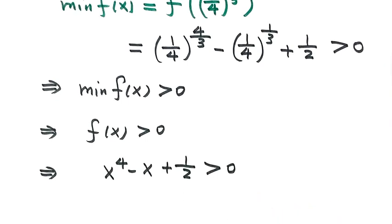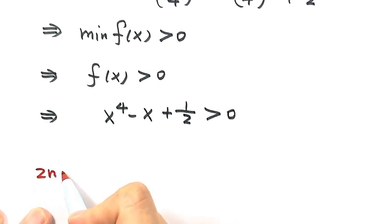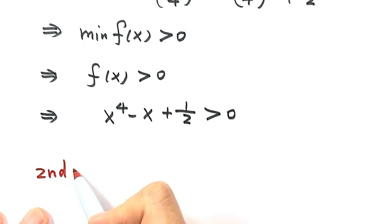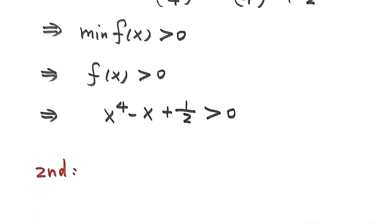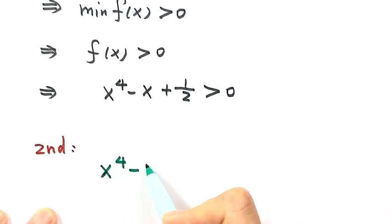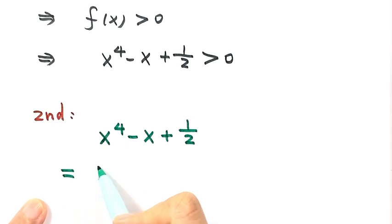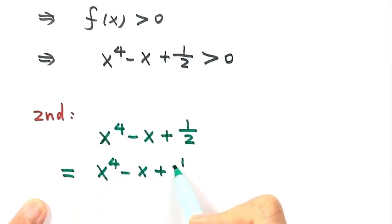Now let's move on to the second method. Sometimes there's a shortcut for some questions. For this question, the second method just uses algebra. Let's start from the left-hand side of the inequality: x to the fourth minus x plus one half. We want to prove this expression is bigger than zero.